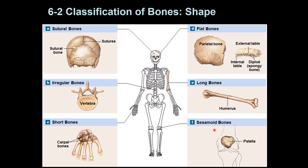The last type is called sesamoid bones — these are small and flat. The most common example is the patella, located in the knee. These bones usually form in areas where there is a tendon — the connection between a muscle and a bone — or any other area made of fibrous tissue with a lot of physical irritation. Sometimes with heavy use of the hands or feet, small bones may form there. They do not have any pathological importance, but that is how they form with increased physical friction.